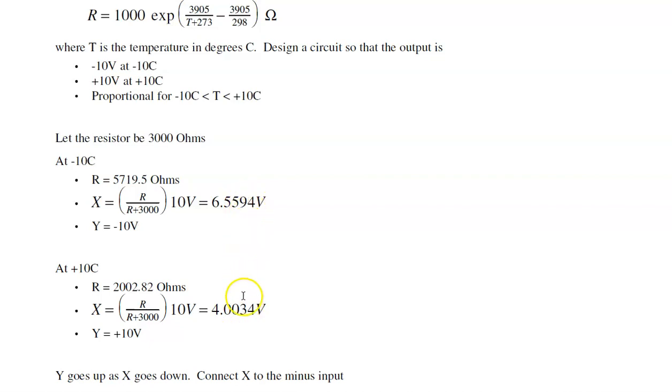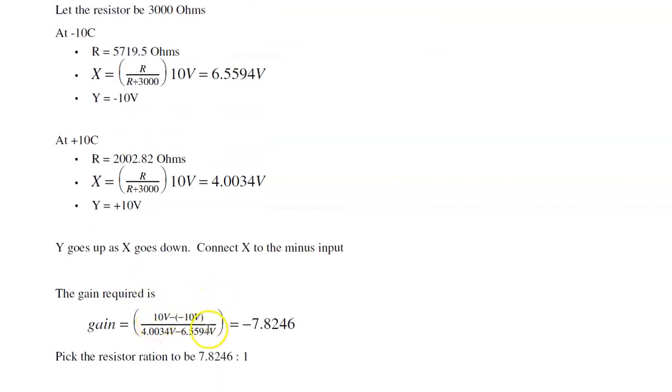As voltage goes down, output goes up, so connect to the minus input. The gain that you need is change in output over change in input. Output changes by 20 volts as the input changes by 2 volts, so we need a gain of minus 7.8. The minus sign is taken into account by connecting the minus input.